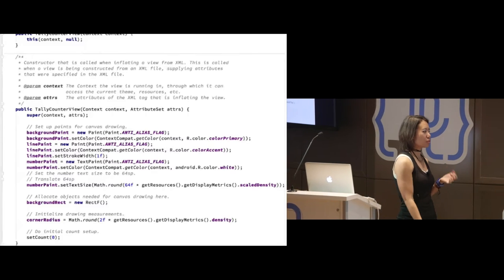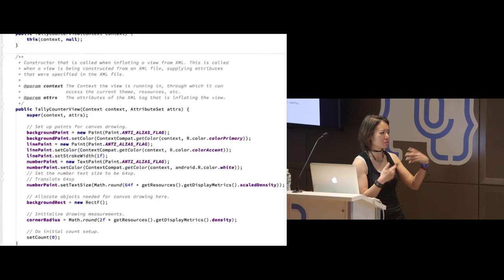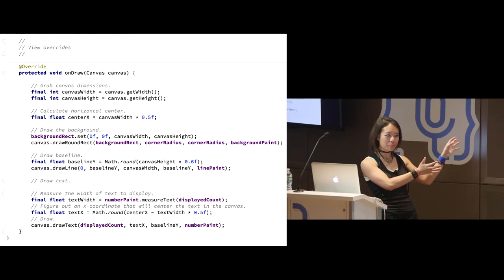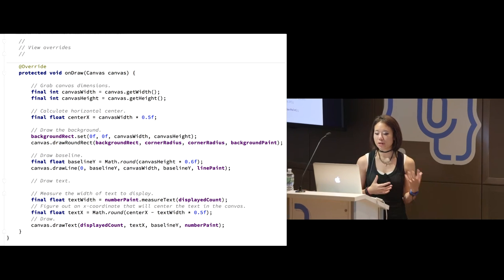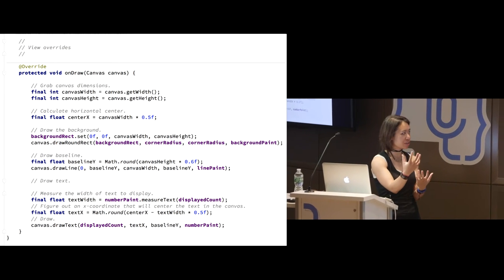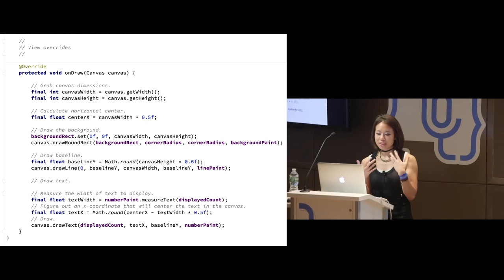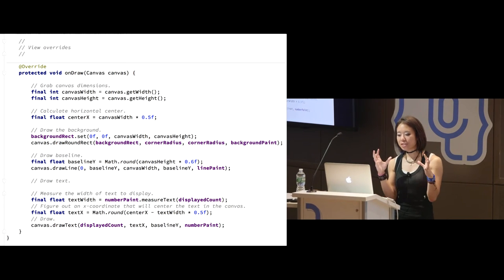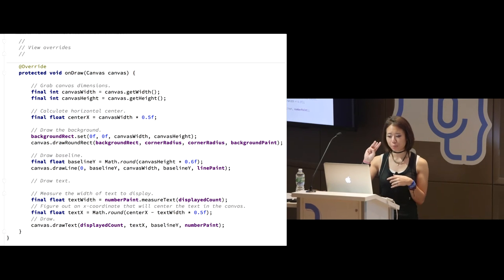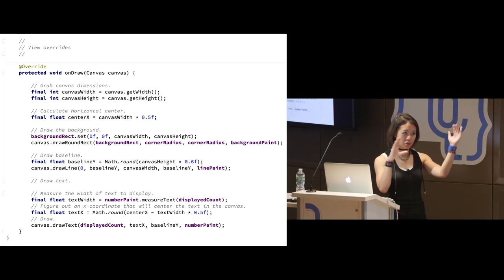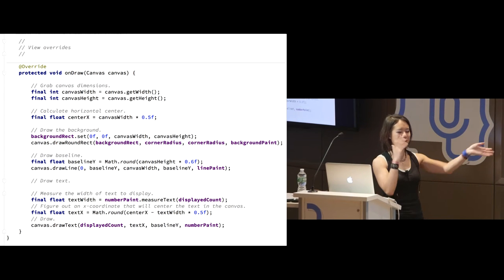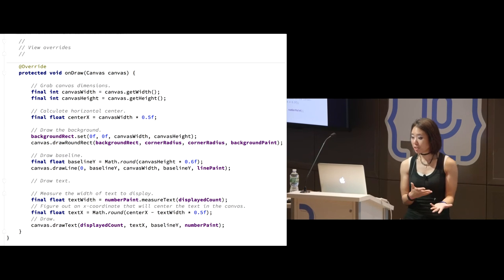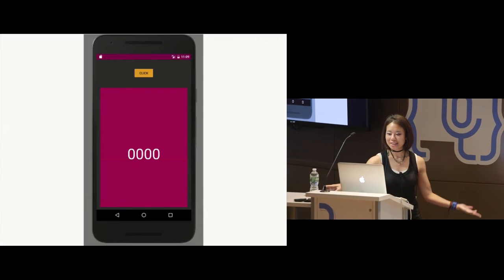Here's the onDraw method. It's pretty straightforward — take the canvas object passed to onDraw and do stuff to it. I do some calculations to center everything, and I call three operations on my canvas: drawRoundRect to draw the pink background, drawLine for the random line I threw in, and drawText to draw the count. And that's it. Just those few lines of code — implementing onDraw and the constructors — I'm able to create this new custom component that looks as intended.